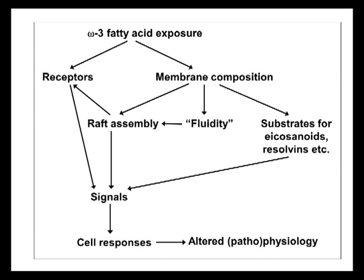The next slide captures these different mechanisms together in a cartoon. Increased omega-3 fatty acid exposure changes membrane composition in inflammatory cells. This can influence the physical properties of cell membranes — the fluidity — and the assembly of functional signaling platforms called rafts. The rafts include receptors, but there are also other types of receptors such as GPR-120 and PPAR-gamma. The changed membrane composition also means a change in the substrates available for producing eicosanoids and resolvins involved in the initiation and resolution of inflammation.